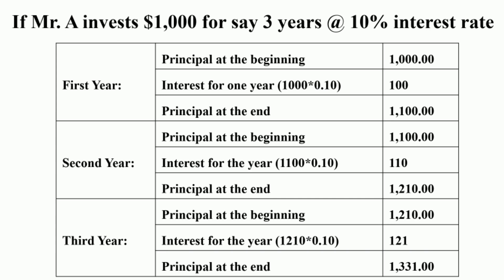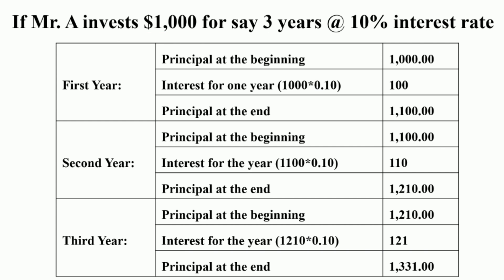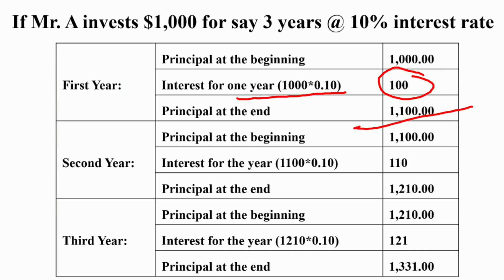For example, if Mr. A invested ₹1000 for 3 years at the rate of 10% interest compounding annually, then the income will rise in the first year. The principal amount at the beginning will be ₹1000. The interest for one year is 10%, so 10% of ₹1000 is ₹100, and therefore the principal amount at the end of the first year will become ₹1100.